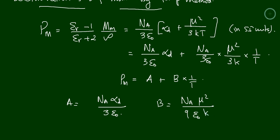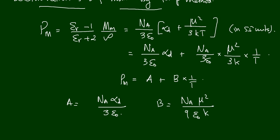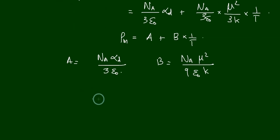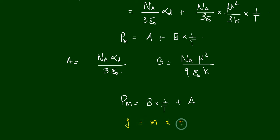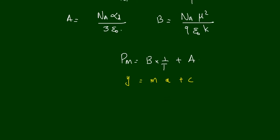In other words, Pm equals b·(1/T) plus a, which is in the form of y = mx + c, where y corresponds to Pm, m corresponds to b, x corresponds to 1/T, and c corresponds to a. You know that y = mx + c is a straight line equation.